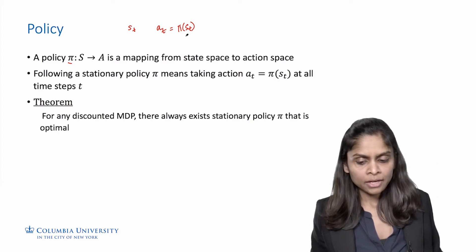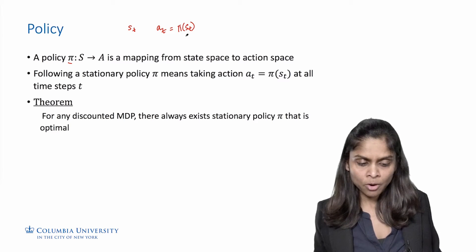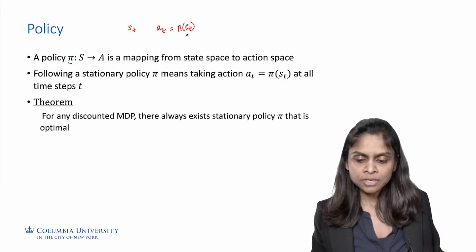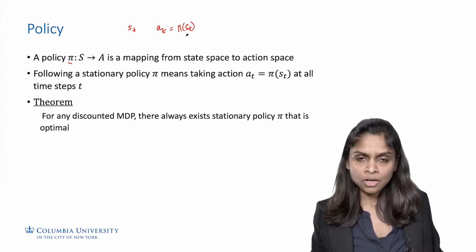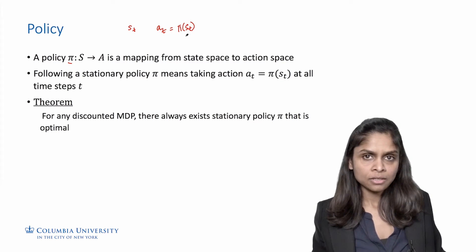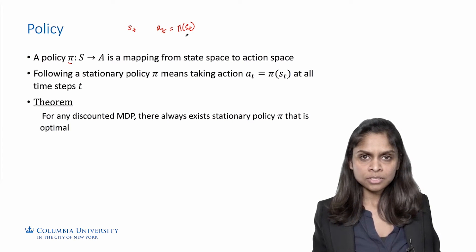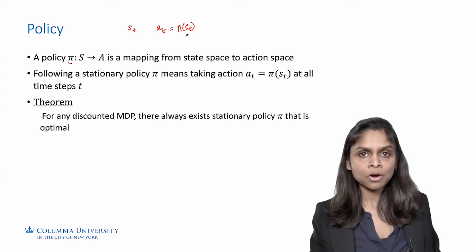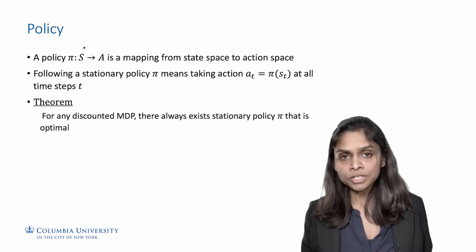Going back to the robot control example, suppose you decide that the robot, whenever it is in a standing position, will walk and not run. This is a policy — a very conservative policy — which says that the robot should always walk from the standing position.